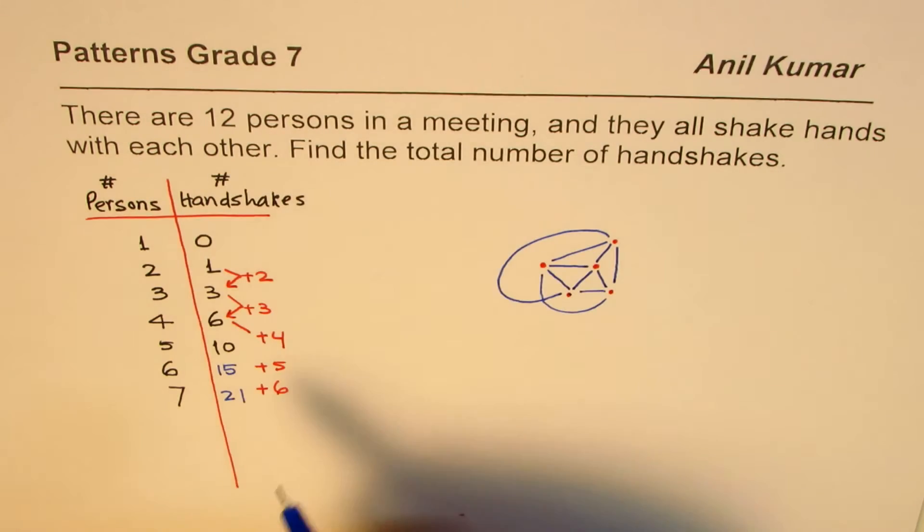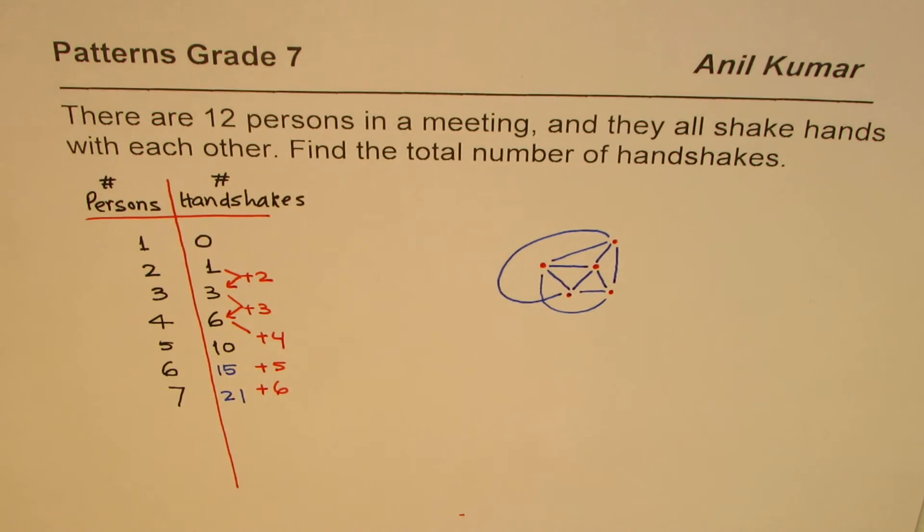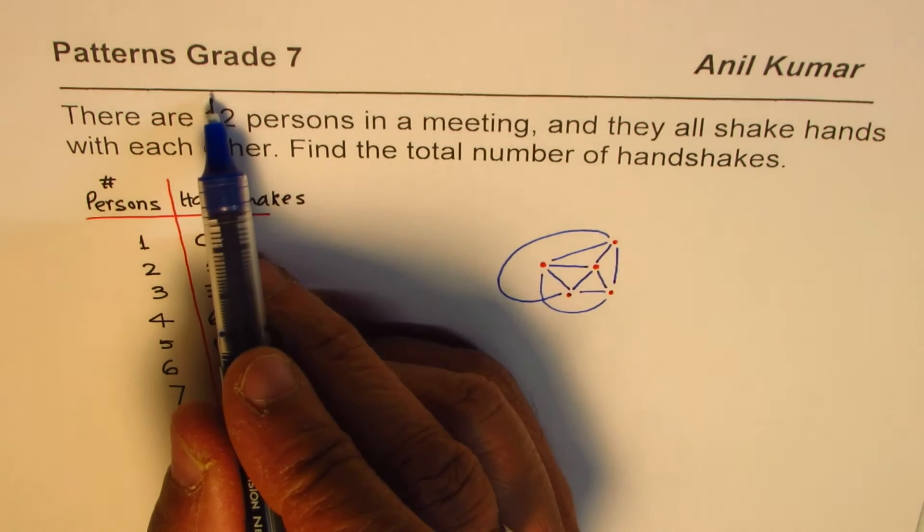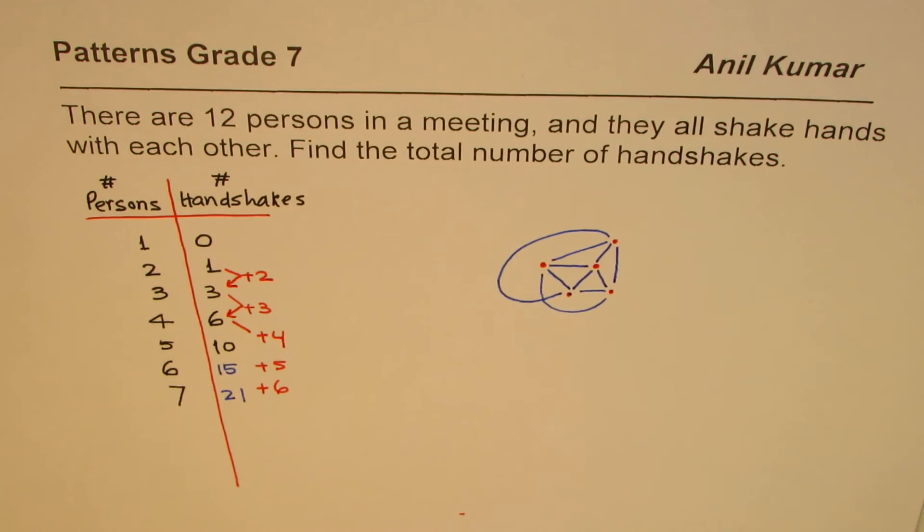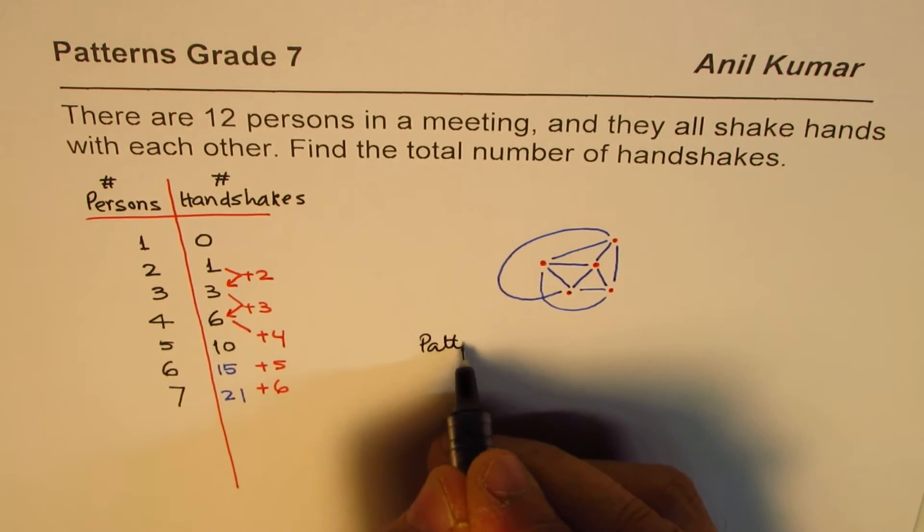Likewise, we can continue to 12 and find the number of handshakes. That is one way of doing it, but this is a very tedious process. If I change this number to 50, then what? Well, it will take the whole day for me to find the number of handshakes.